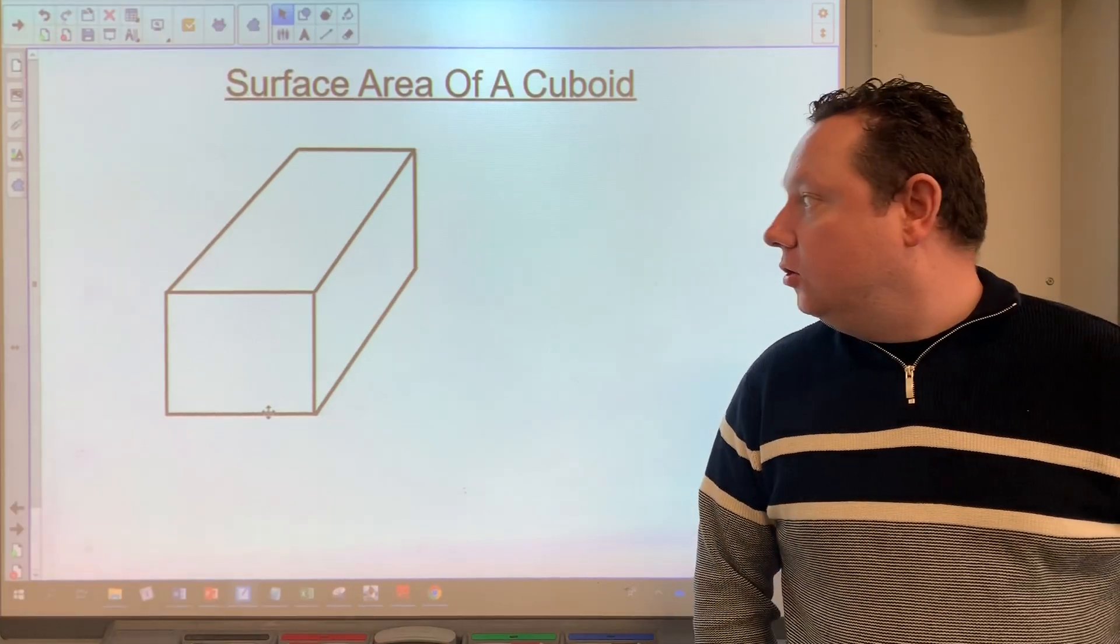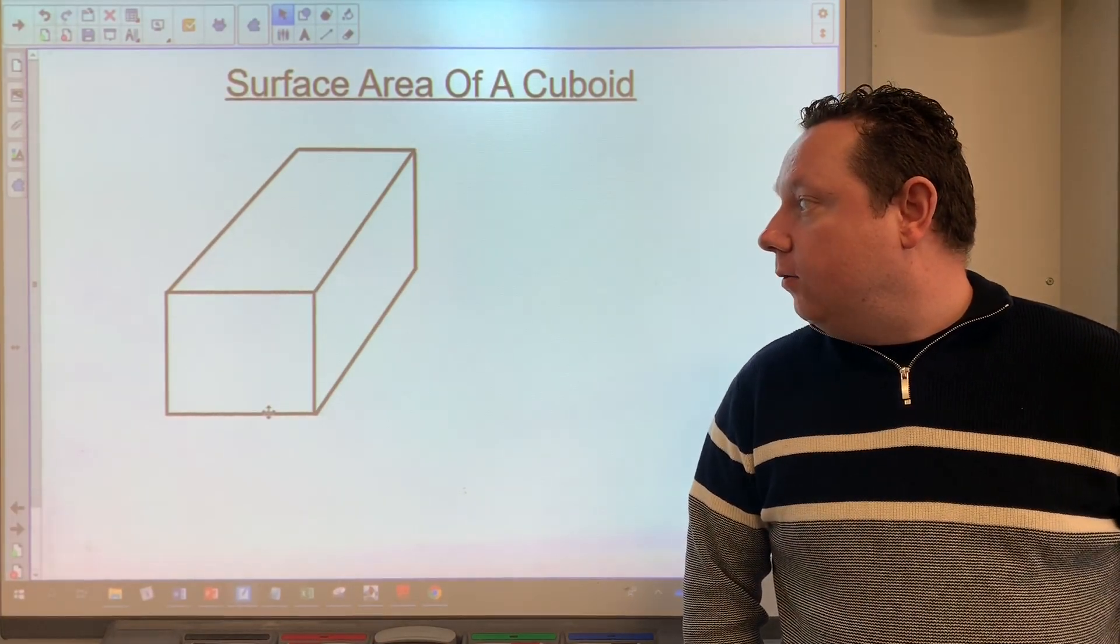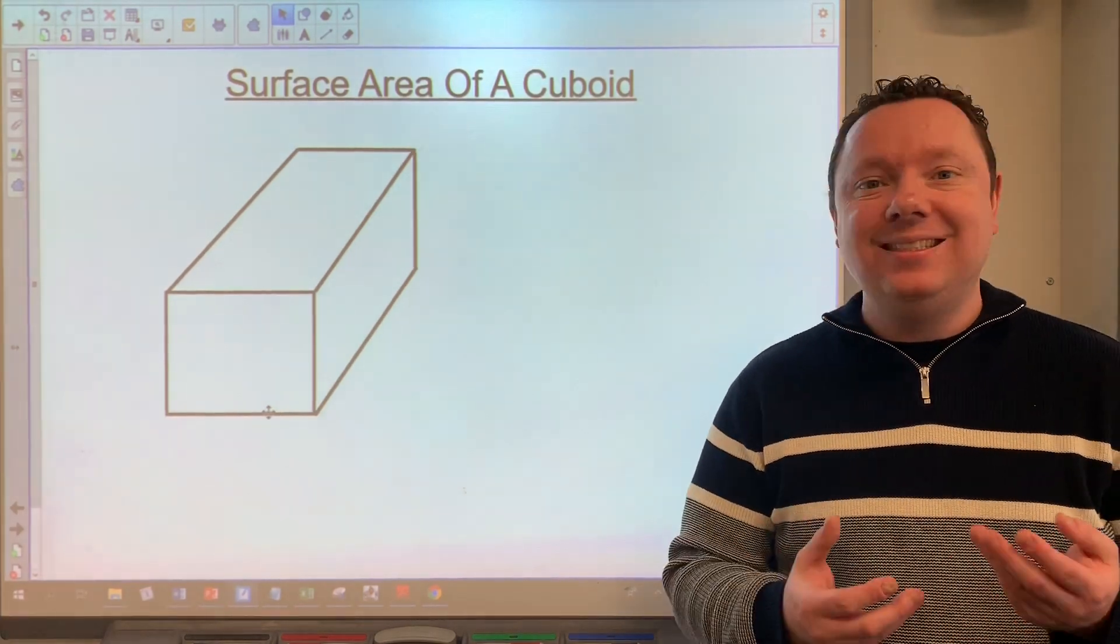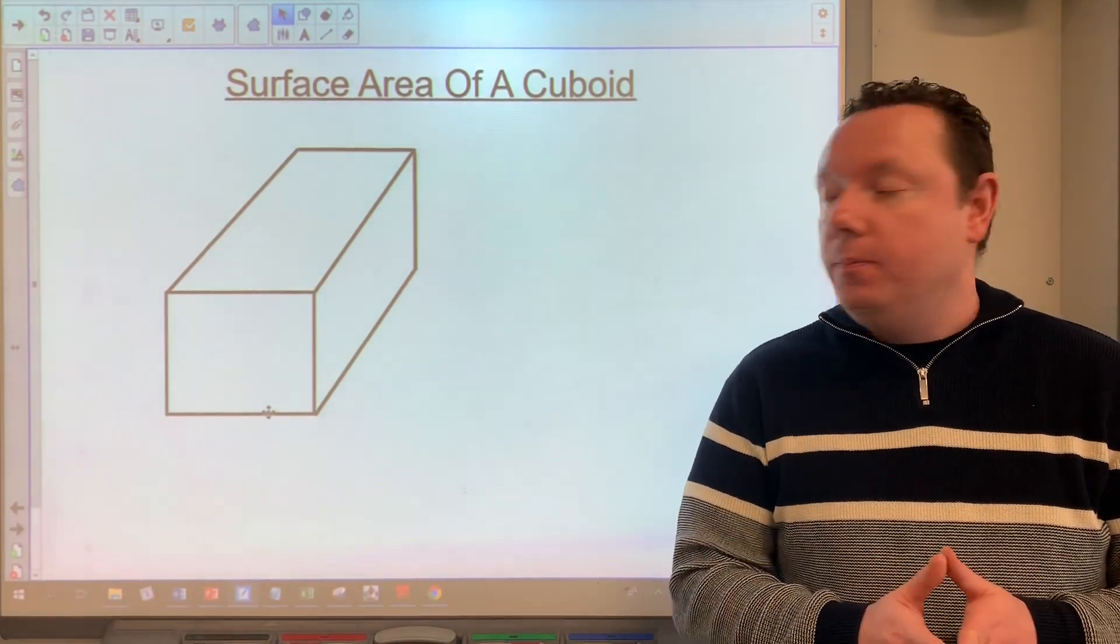Okay, surface area of a cuboid. So on the board is a cuboid and we want to work out the area of all the faces on the cuboid. Remember, a cuboid has six faces, three sets of two pairs.